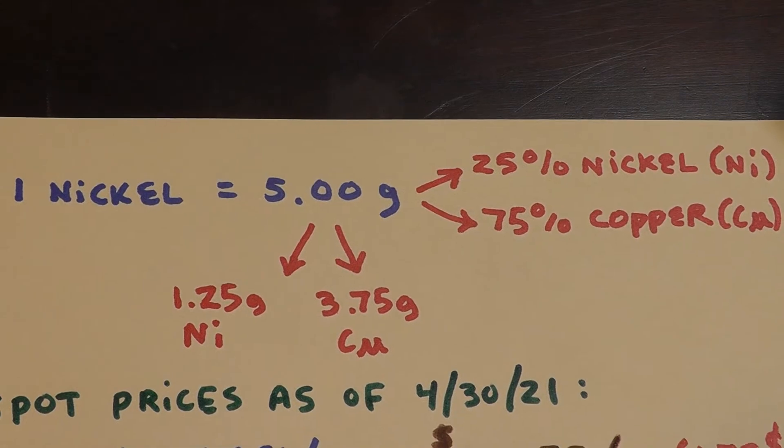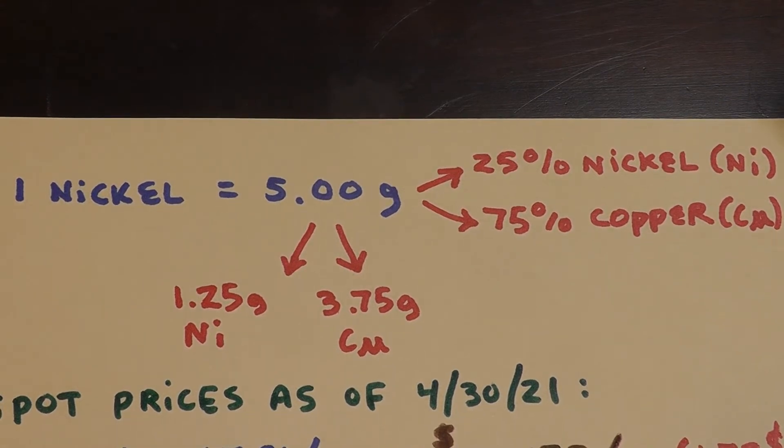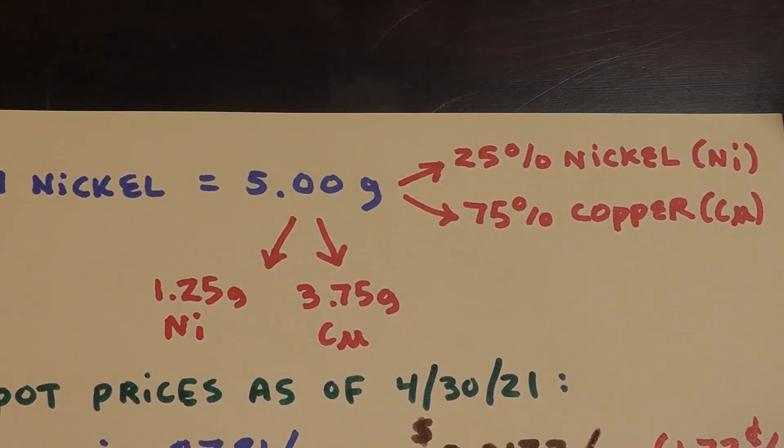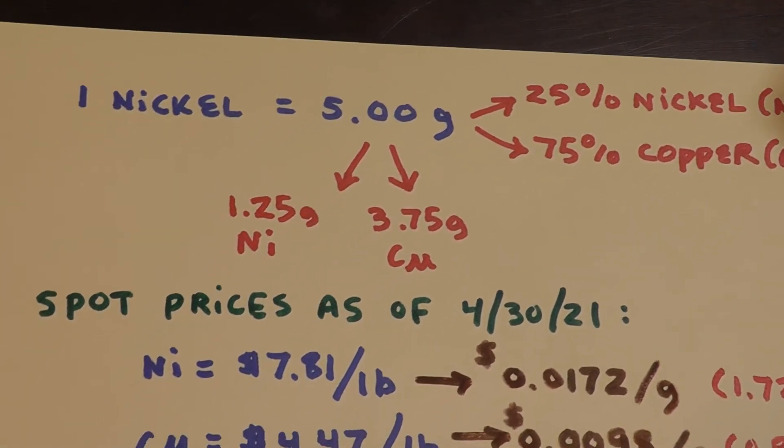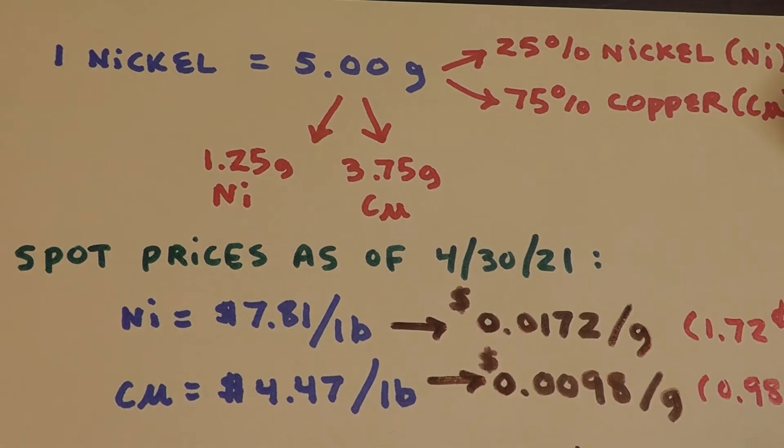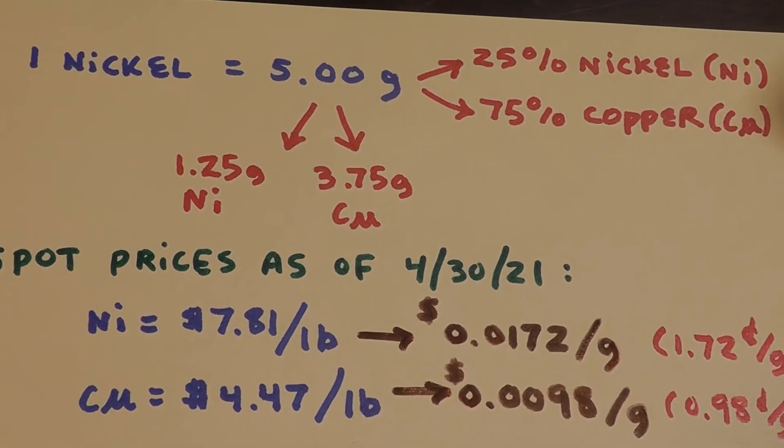First of all, a nickel is 5 grams. 25% of that nickel is nickel, as I said, 75% is copper. So that's 1.25 grams of nickel and 3.75 grams of copper.